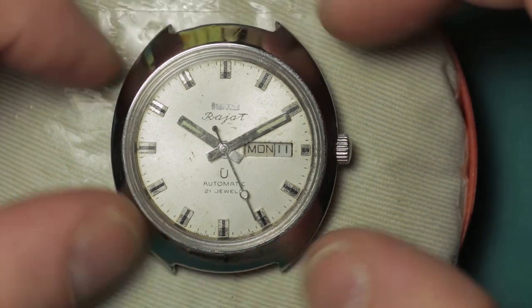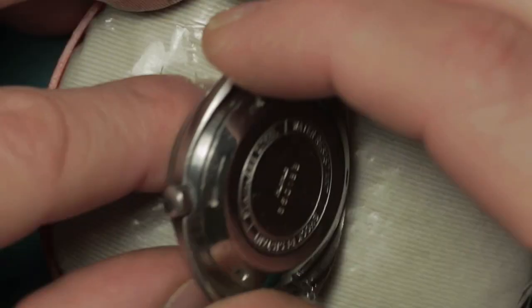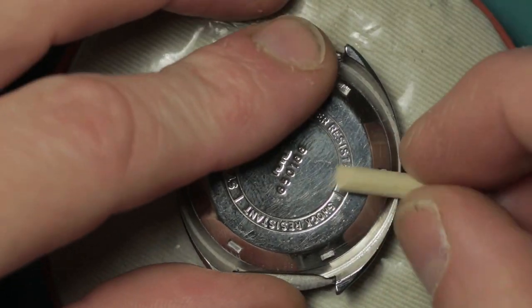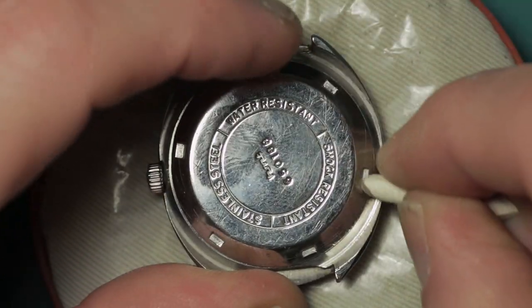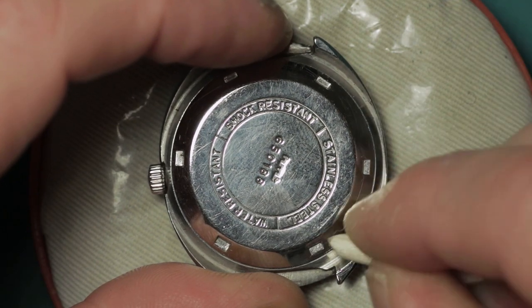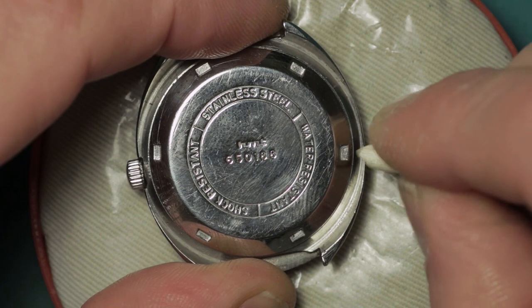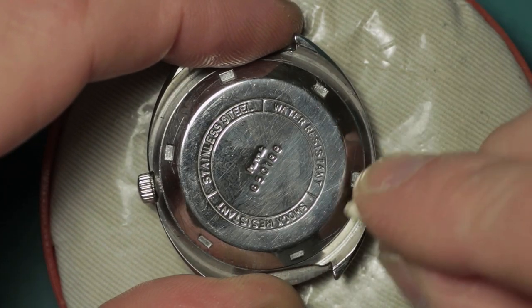Hi and welcome to this disassembly of an HMT Rajat automatic watch. HMT, for those who aren't aware, stands for Hindustan Machine Tools, and these are watches that were made in India for a very long time.